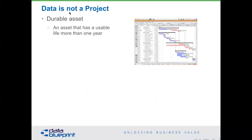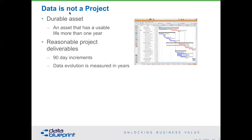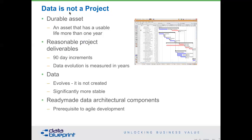Data is a durable asset with a very specific definition in accounting terms — an asset with a useful life of more than one year — which means reasonable project deadlines in a project sense, maybe 90-day increments or two-week sprints, but the data evolution is measured in different terms. It just isn't possible to change that much back to good from the current state. Data evolves. It is generally not created — it is significantly more stable across the years for organizations than are the process controls they use.